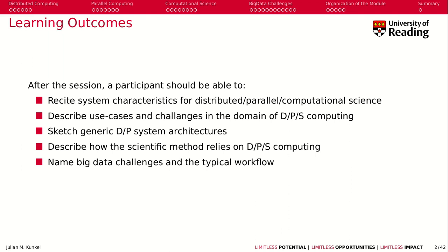You may be able to skip them and come back later after you've watched the other videos of this session, but I will read them out now. After the session a participant should be able to recite system characteristics for distributed, parallel, and computational science; describe use cases and challenges in the domain of distributed, parallel, and scientific computing; sketch generic distributed and parallel system architectures; and finally, describe how the scientific method relies on distributed, parallel, and scientific computing.